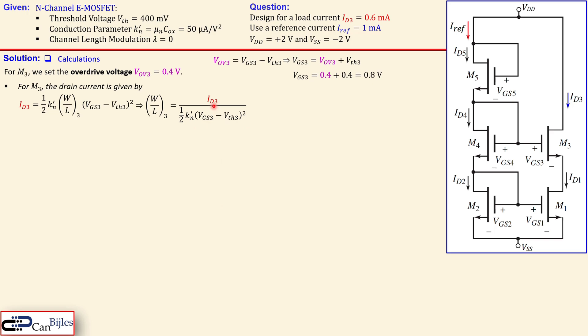We know what the ID3 must be. We know the KN prime. We know the other value because we just determined the VGS3 here and then we have this expression and we can calculate that this must be 150. Now this means actually the following W over L the ratio must be 150.